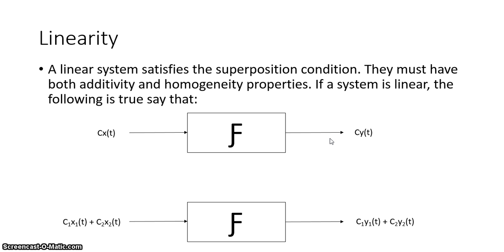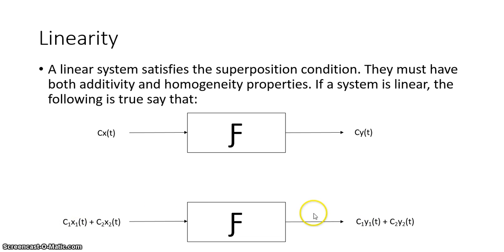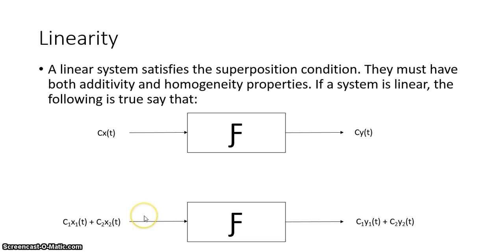Also, if a system has linear properties, then if we have inputs x1(t) and x2(t), where x1(t) is scaled by constant c1 and x2(t) is scaled by constant c2 and they're added together, then their outputs y1(t) and y2(t) will be scaled by those same constants c1 and c2 respectively, and those two output terms will be added together.